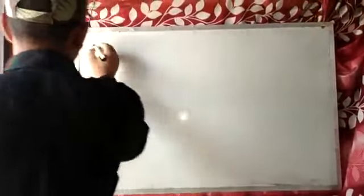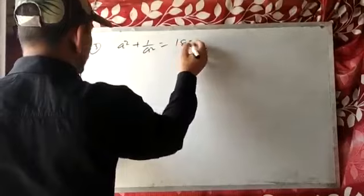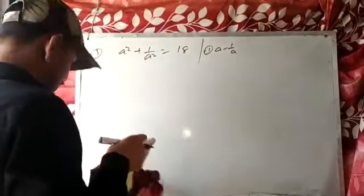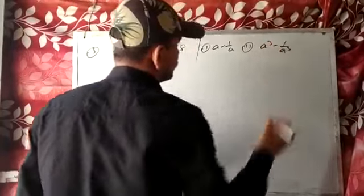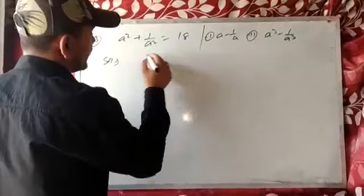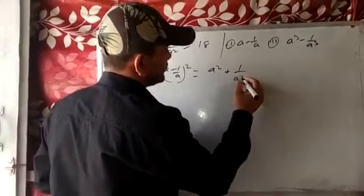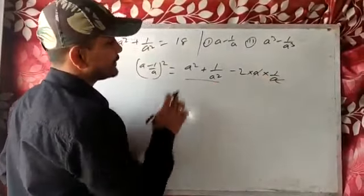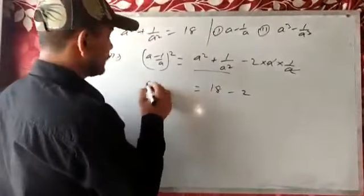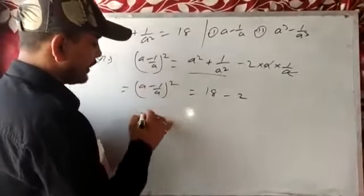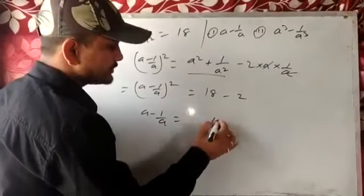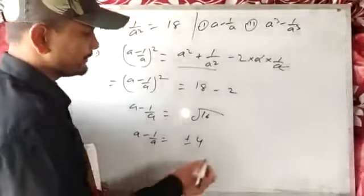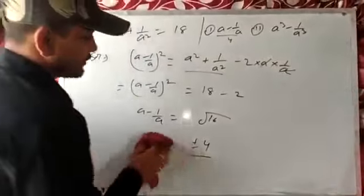Question number 3: if a squared plus 1 by a squared equals 18, find a minus 1 by a and a cube minus 1 by a cube. Using a minus b whole square equals a squared plus b squared minus 2ab, we can cut a to a, giving 18 minus 2 equals a minus 1 by a whole square. So 16 equals a minus 1 by a whole square, and taking square root gives a minus 1 by a equals plus or minus 4.